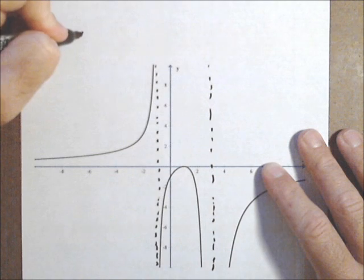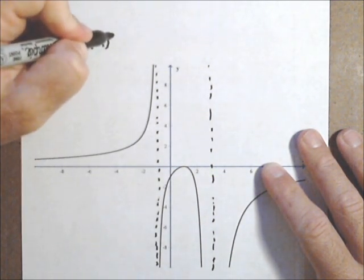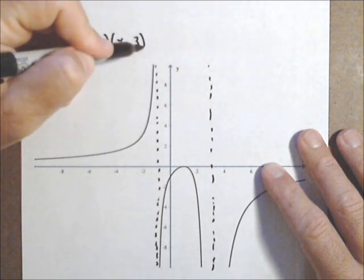Which leads us to a factor of x plus one, and three, which leads us to a factor of x minus three in the denominator.